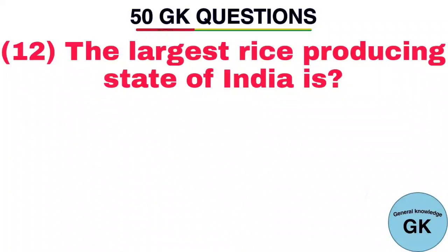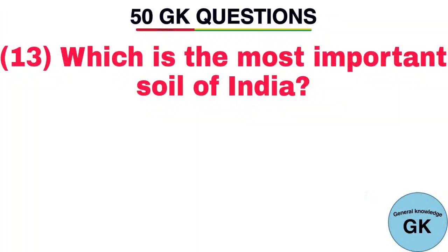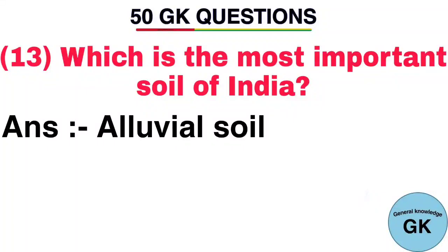Question number 12. The largest rice producing state of India is. Question number 13. Which is the most important soil of India? Answer: Alluvial soil.